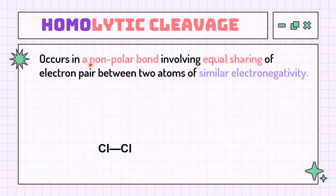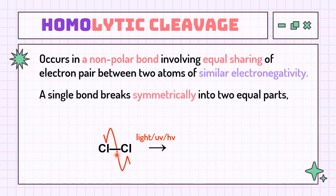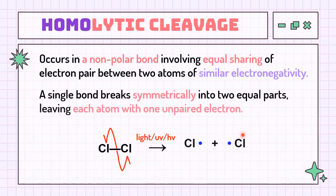Homolytic cleavage takes place in a non-polar bond, where two atoms of similar electronegativity are joined. For example, with a chlorine-chlorine single bond, in the presence of light or UV (hν), this single bond will break into two equal parts, leaving each atom with one unpaired electron, known as free radicals.